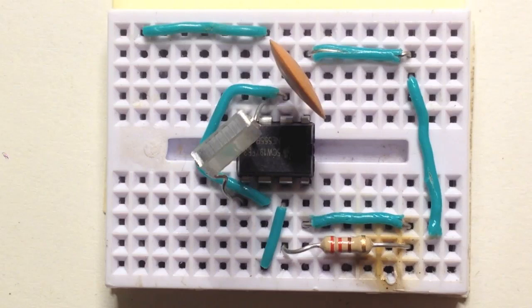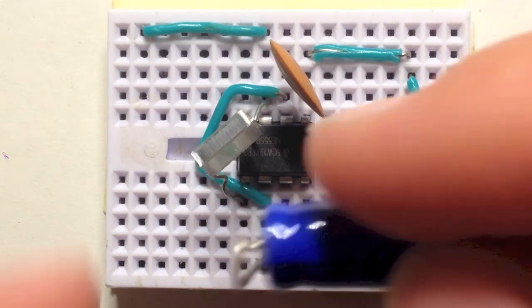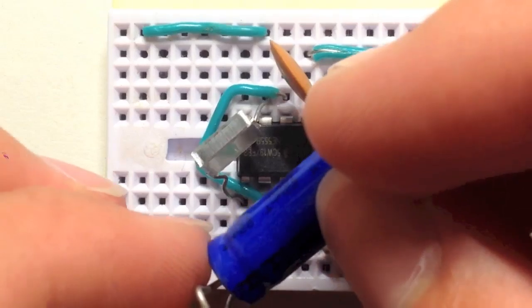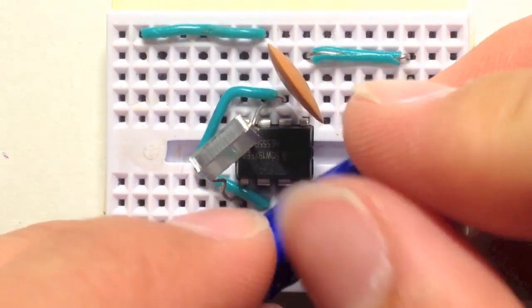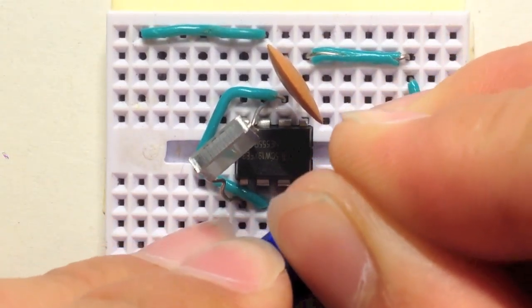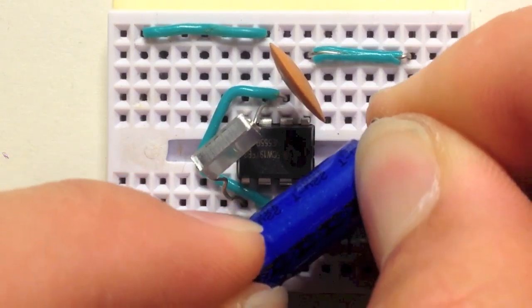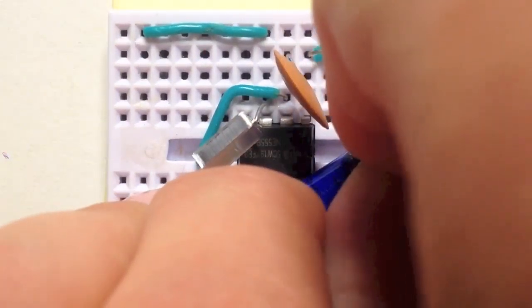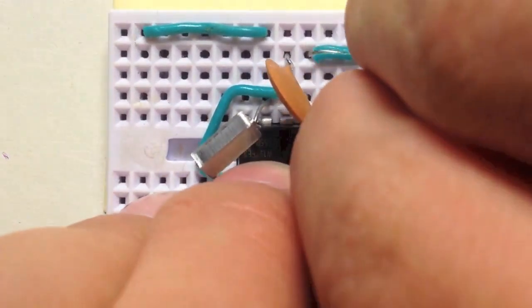Proceed by attaching a 100 uF capacitor to pin 5. This capacitor will be our audio input on our 555 timer class D amplifier. Insert it like so. These pins on the breadboard may be a little stiff.